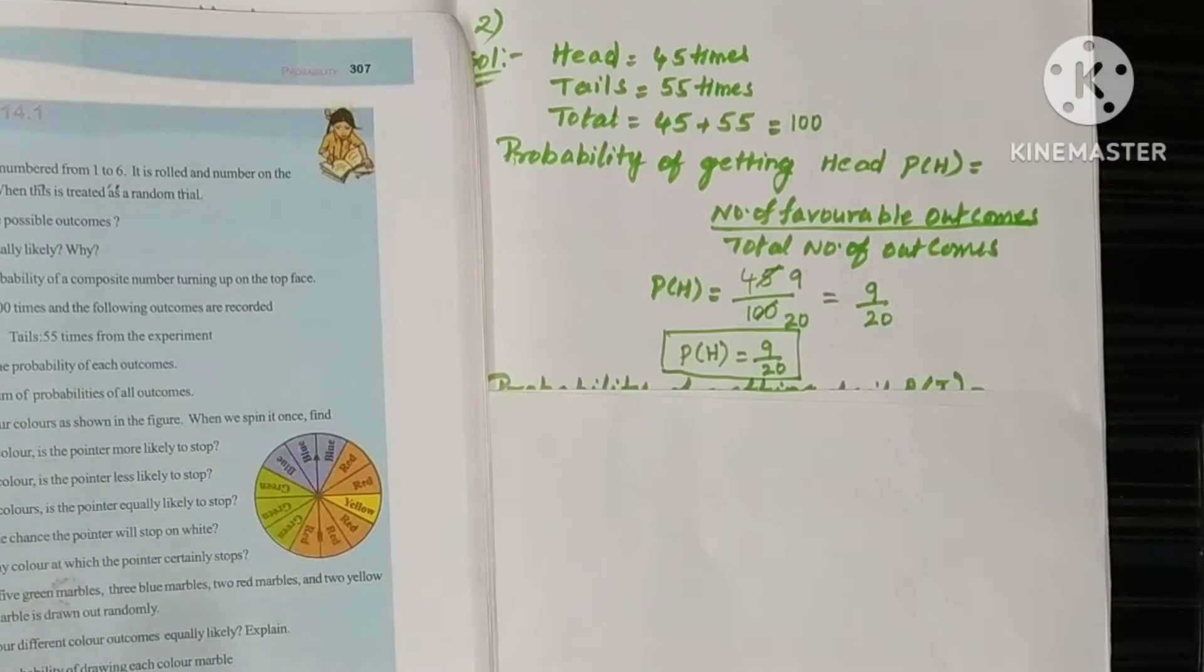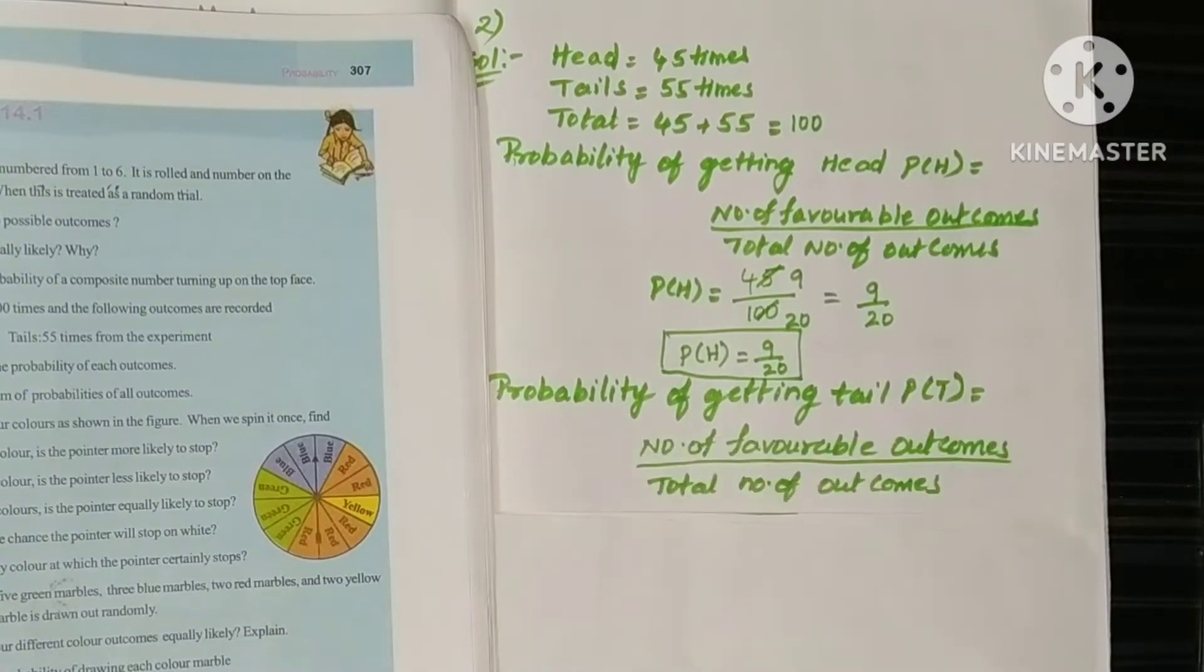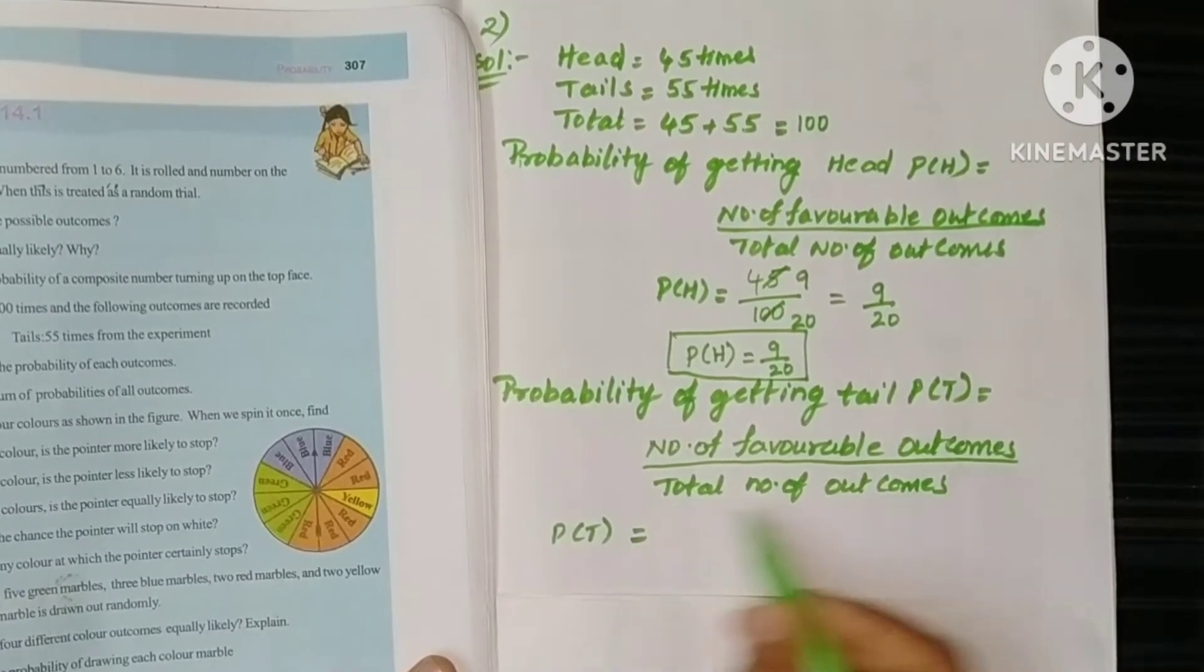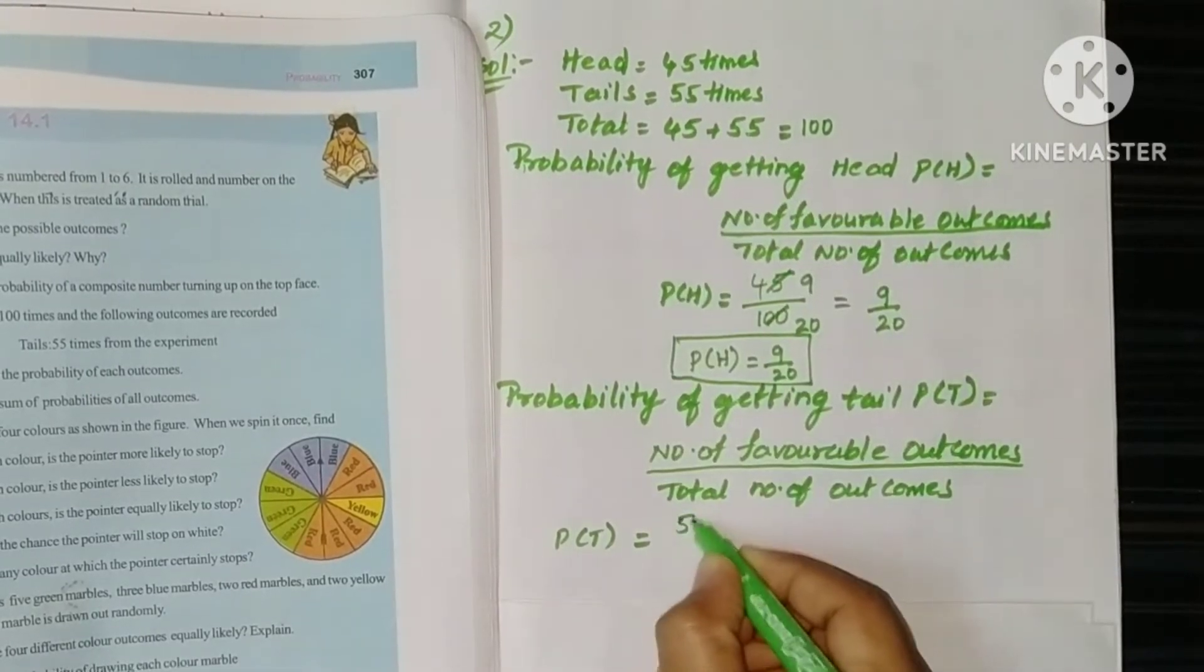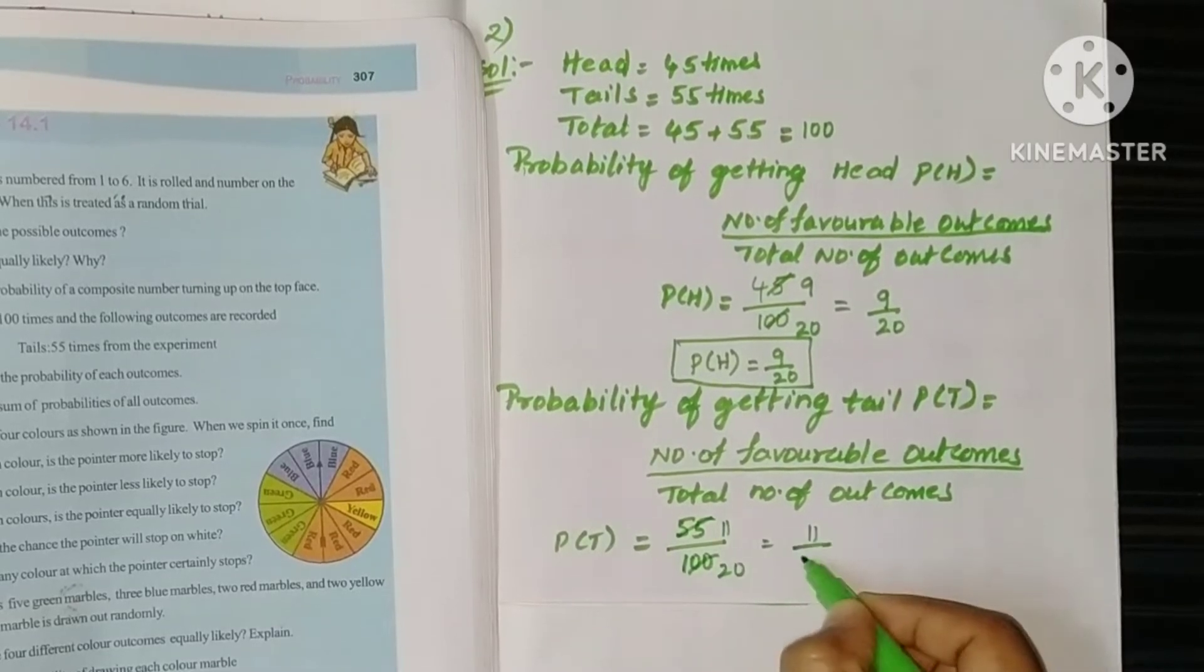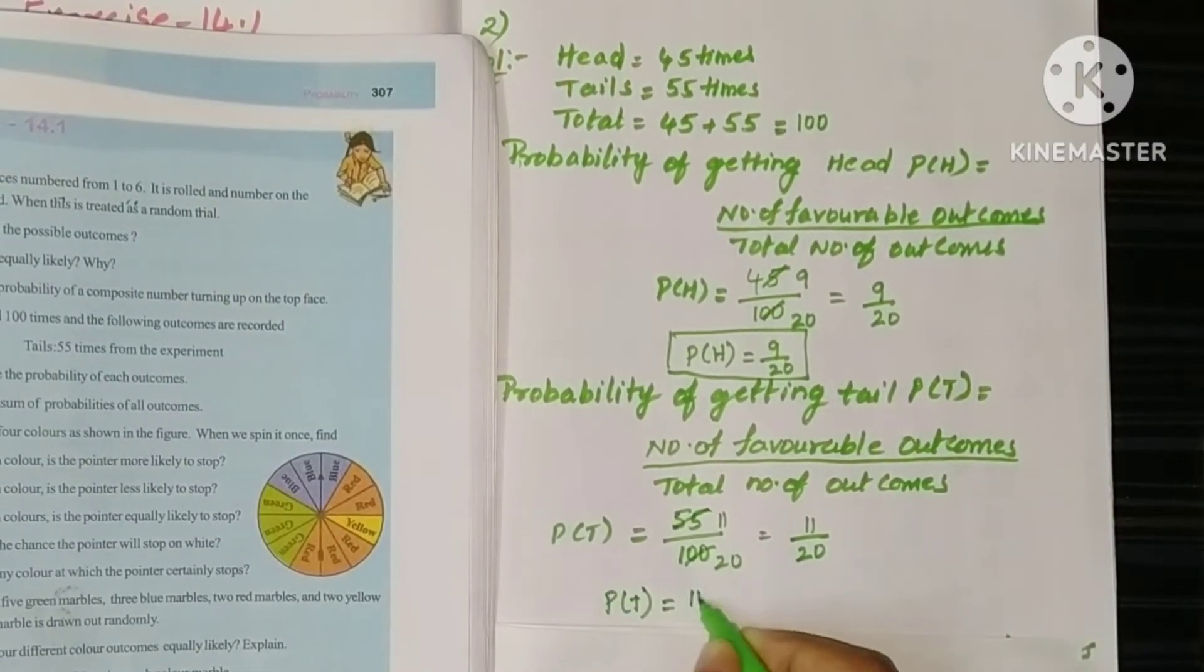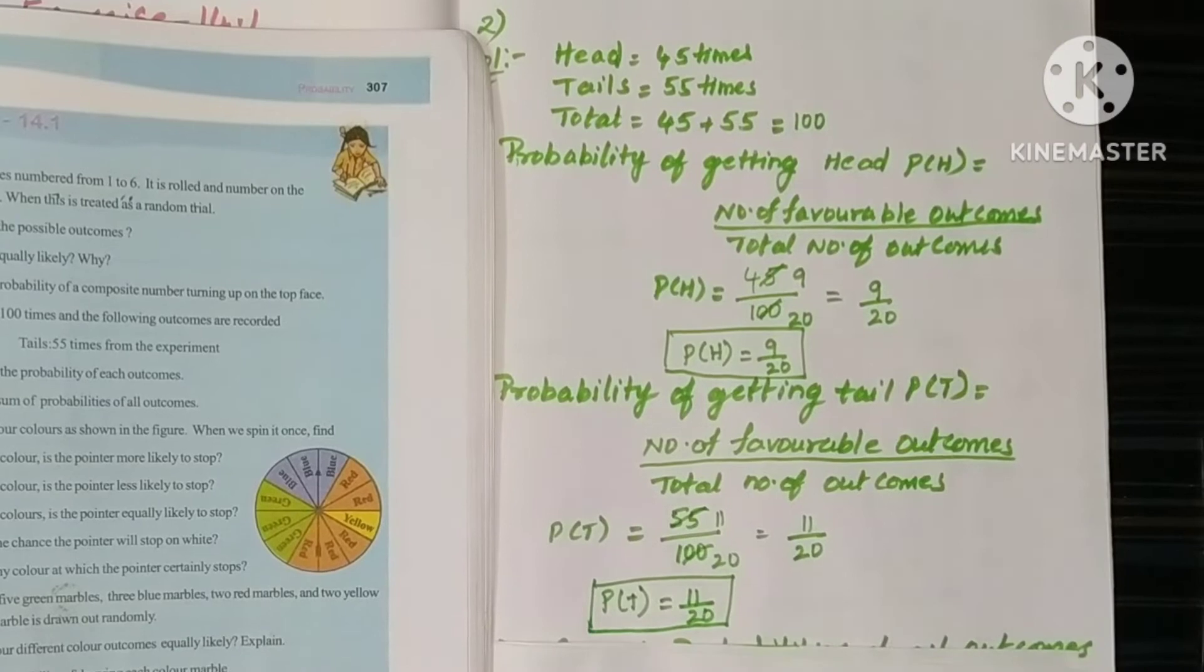Now for tail. Probability of getting tail, P of T. Again try to write the formula - it leaves a good impression for the examiner. Number of favorable outcomes by total number of outcomes. P of T: number of tails 55, total 100. Again with 5 table: 5 elevens, 5 twenties. So it's 11 by 20. Finally, P of T equals 11 by 20.